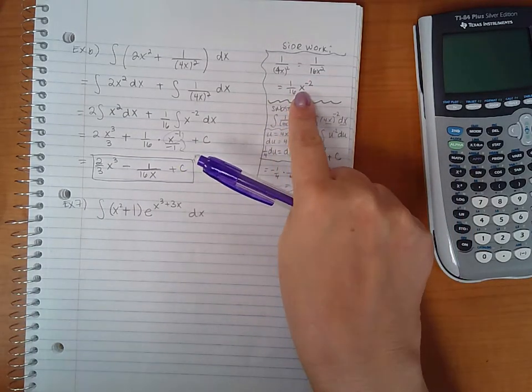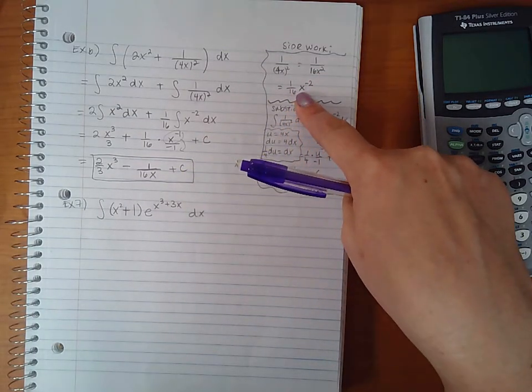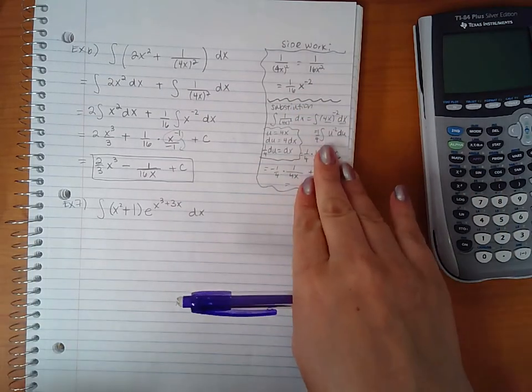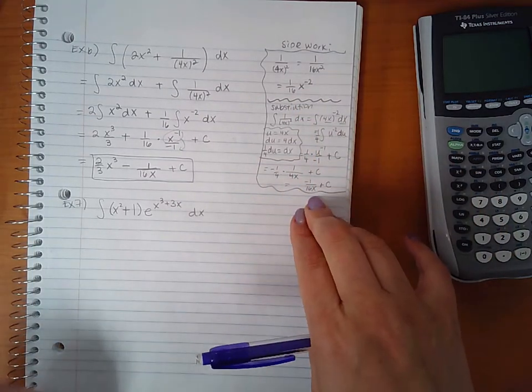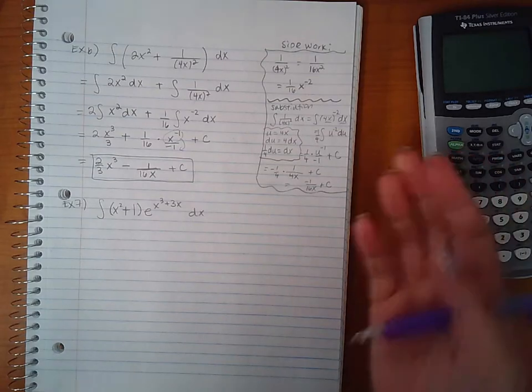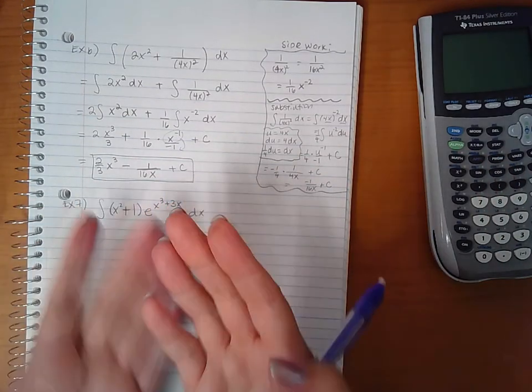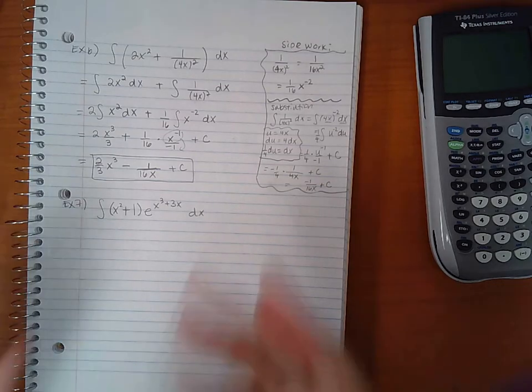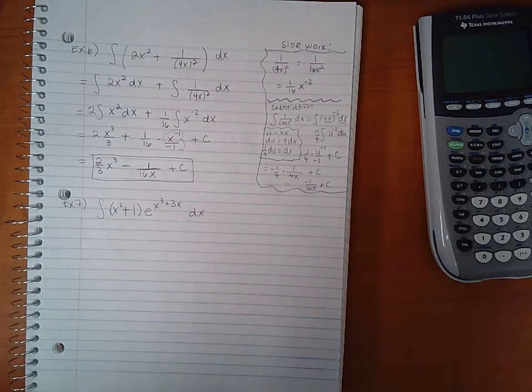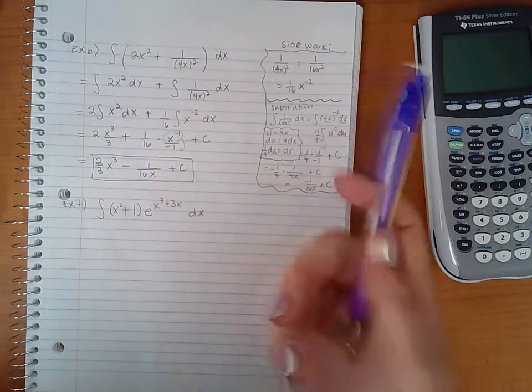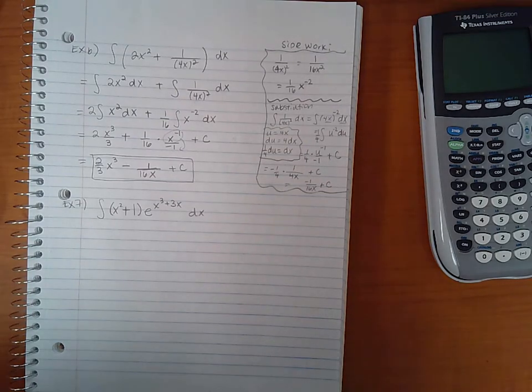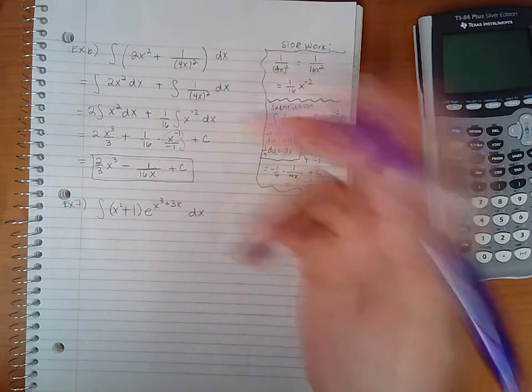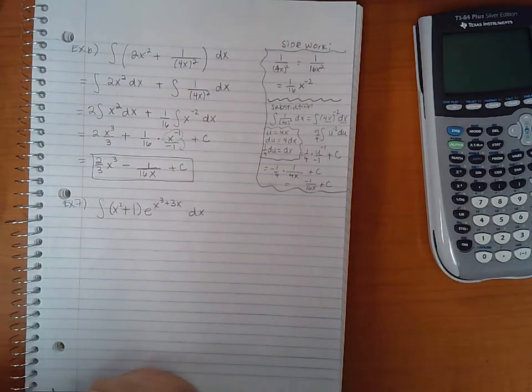So either way, whether you just manipulated the expression and found something that could be integrated without substitution, or whether you took it the way it was and you integrated it with substitution, in this particular problem you do have a choice. Most other problems you don't. This one just worked out a little bit funny in the fact that it was simply a square, which a square can be manipulated rather easily. Same thing if it were a cube or fourth power or anything like that.